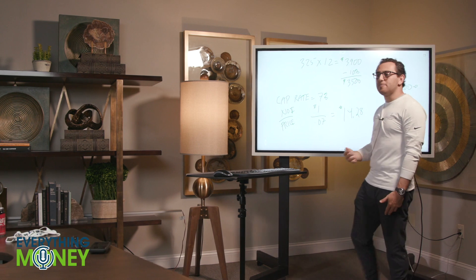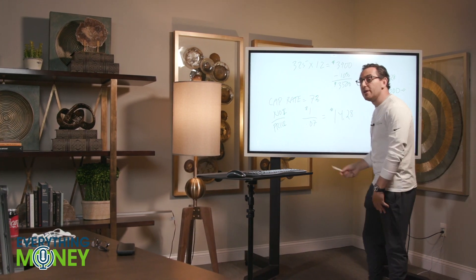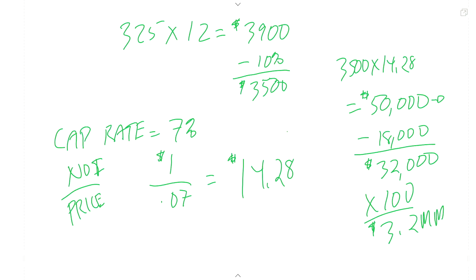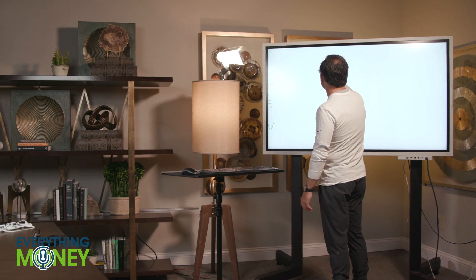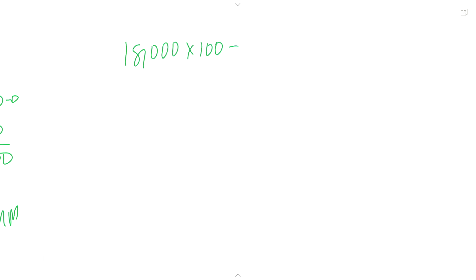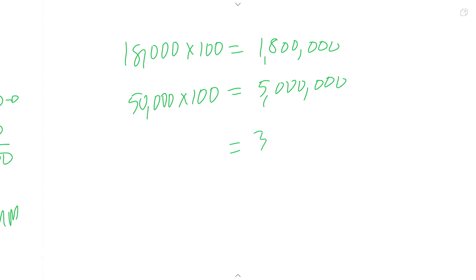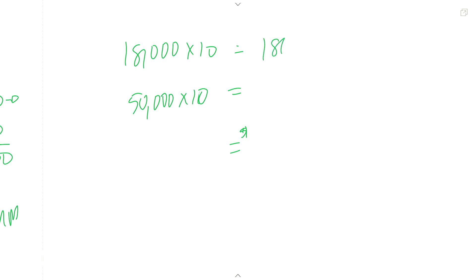I made $32,000 per unit times 100 units equals $3.2 million in profit. It took three years, but still — three years to make $5 million in value by investing $1.8 million. I did $18,000 a unit times 100 units: $1.8 million invested. I created $50,000 in value per unit times 100: $5 million. My profit is $5 million minus $1.8 million: $3.2 million. Scale it down: 10 units is $180,000 invested and $500,000 in value — $320,000 in profit.